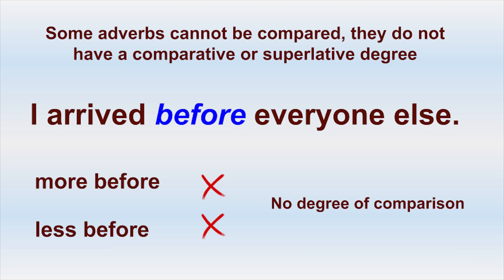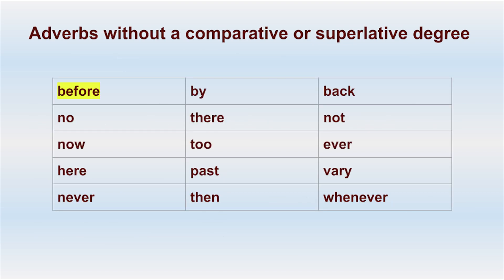Here is a list of some of these non-comparable adverbs: before, by, back, no, there, not, now, to, ever, here, past, very, never, then, whenever. These adverbs cannot be compared.